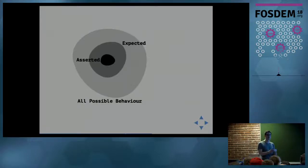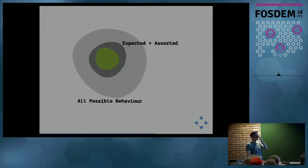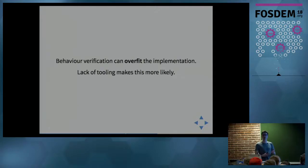We've artificially constrained the test. If someone decides to slightly change the implementation of the robot and how it makes decisions, so instead of moving 100 it moves 120, that might still be within our realm of expected, but it will break the test because it's moved out of that tight asserted space. What we really want is our expected and our asserted to be the same. Behavior verification can overfit the implementation, and the lack of tooling and good ways of matching argument values makes this more likely.